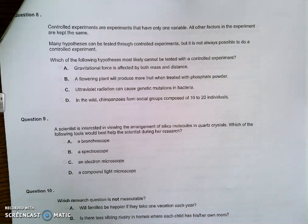Question 9. A scientist is interested in viewing the arrangement of silica molecules and quartz crystals. Which of the following tools would best help the scientists during her research? And the answer to that is C, an electron microscope. Microscopes are tools that magnify the appearance of an object. A compound light microscope can produce an image that is a thousand times larger than the actual specimen. That is not large enough to view a molecule. An electron microscope can produce an image a hundred thousand times larger than an actual specimen. And this is what is needed to view something as small as a molecule.